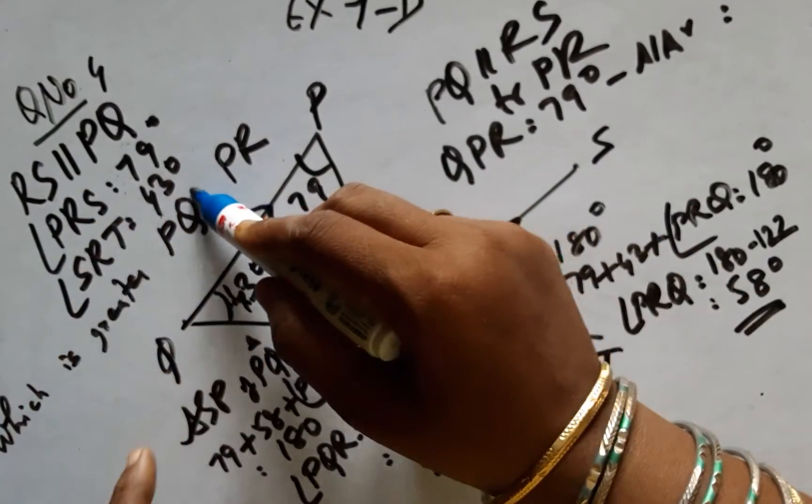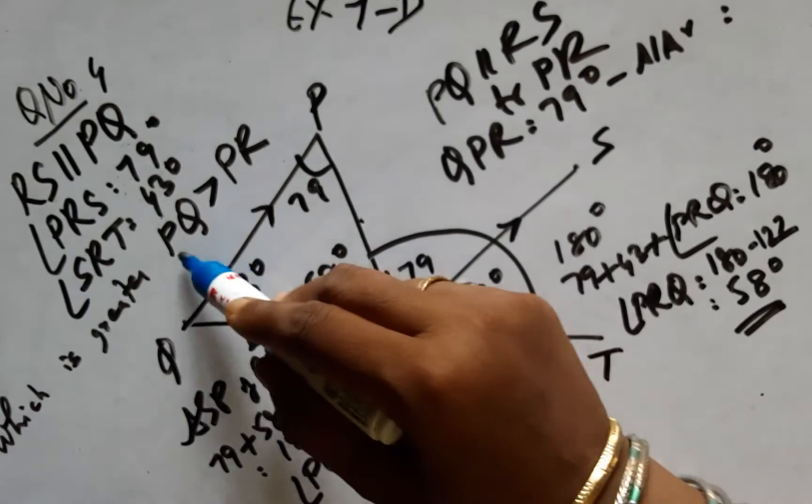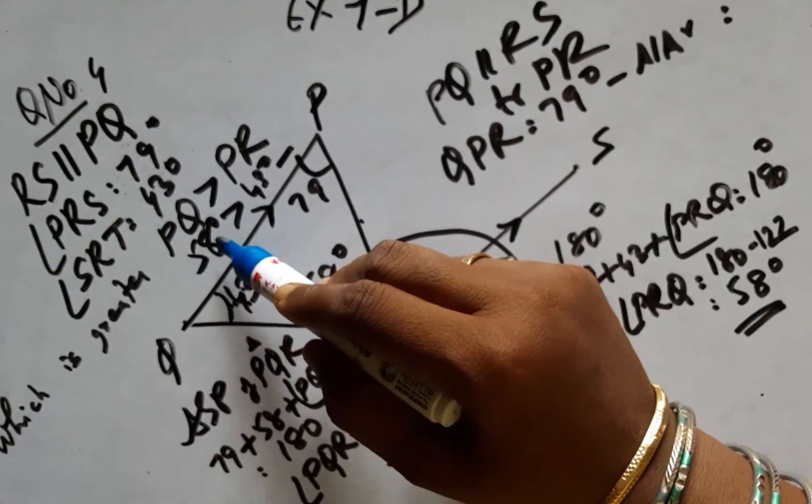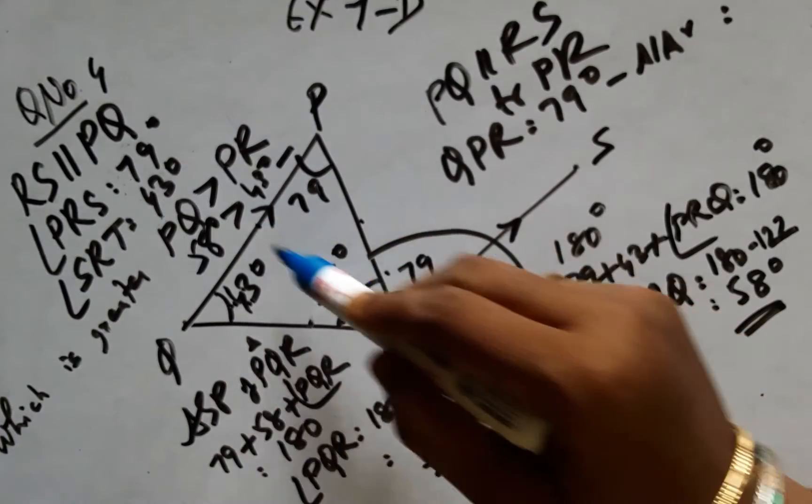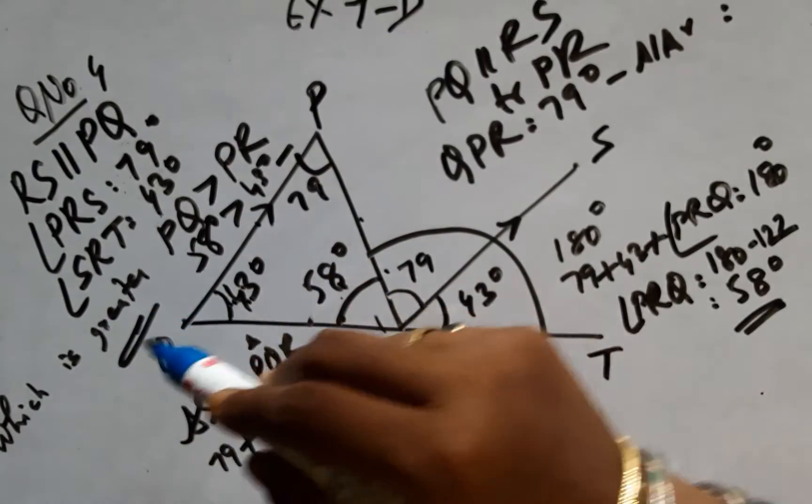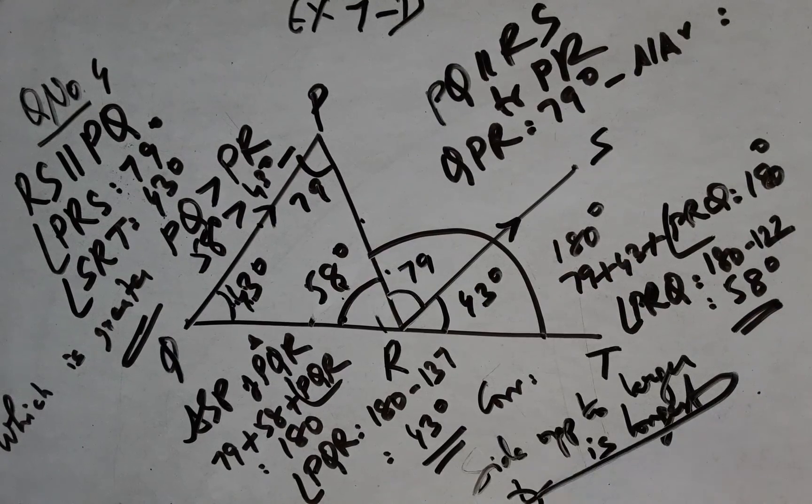Therefore, PQ is greater than PR because 58 is more than 43. The side opposite to the larger angle is longest. That is the justification.